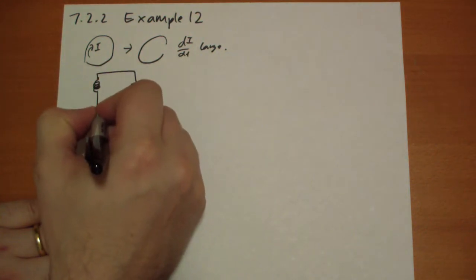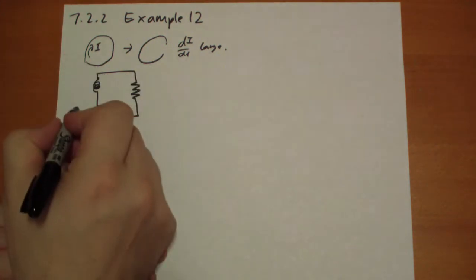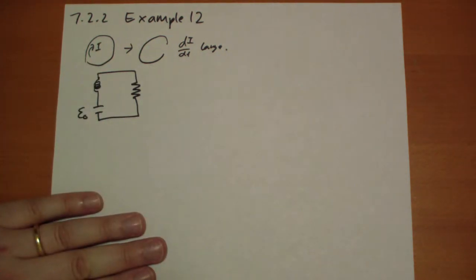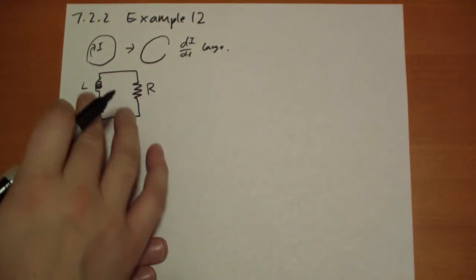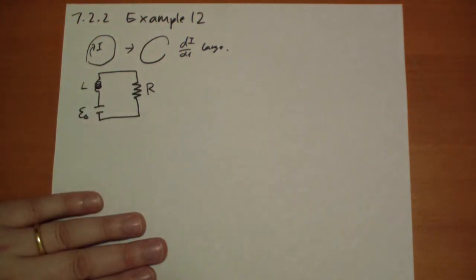So let's say we had a battery and we had an inductor. The battery generates a force of epsilon-naught. This has inductance L. This has a resistance R. And then this inductor really represents the entire inductance of the circuit.